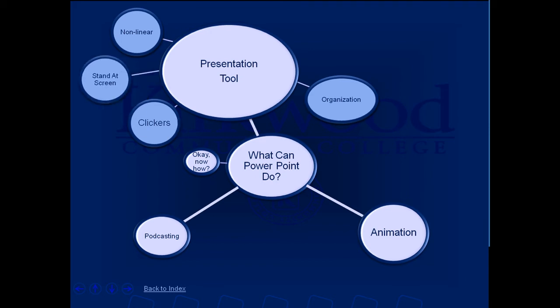I'll also talk about something called the Smoothboard — the Wii Smoothboard — a way that you can stand at the screen while you present, so students are looking at you and looking at what you're presenting at the same time, not going back and forth between some podium. This is a little bit like a wireless mouse, but it has some advantages and some disadvantages to that technique.